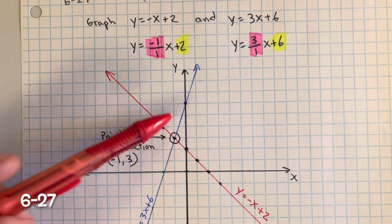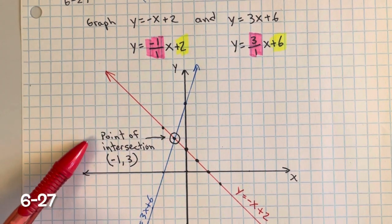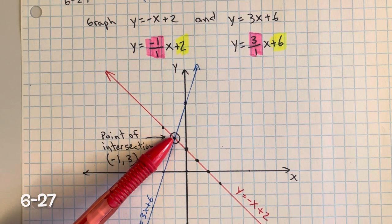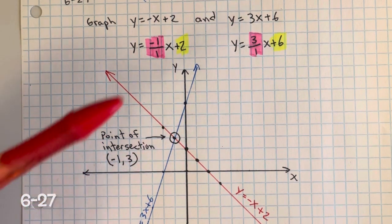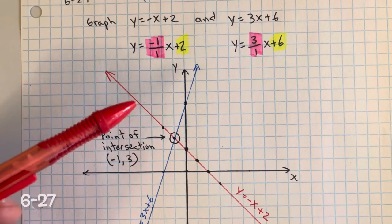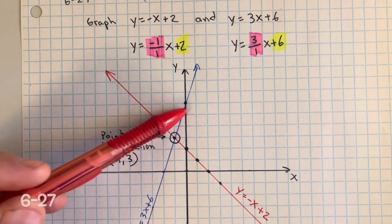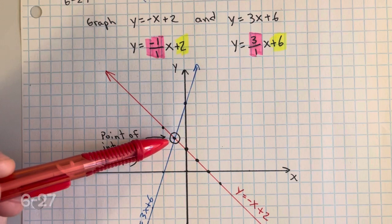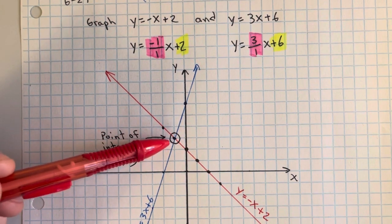Where these two lines intersect is called the point of intersection, at negative 1, positive 3. Does more than one point of intersection exist? No, because if you have two lines, they will never intersect at more than one location.